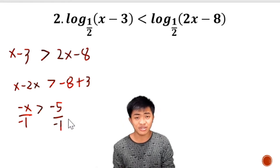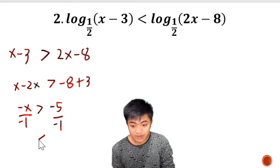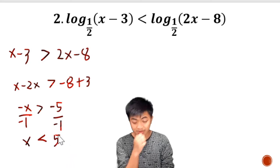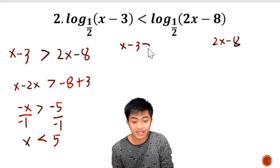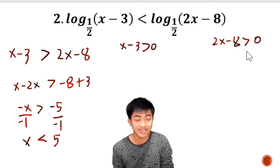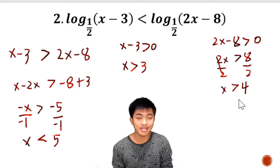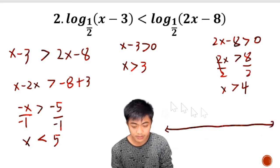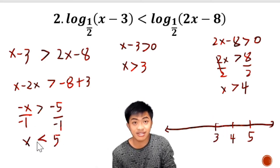Back to simple algebra, we solve for x. A general rule when solving inequalities: if we divide both sides by a negative number, we must reverse the inequality symbol again. So after reversing, x is less than positive 5. We're not done — we still need to check the arguments by setting them greater than 0.